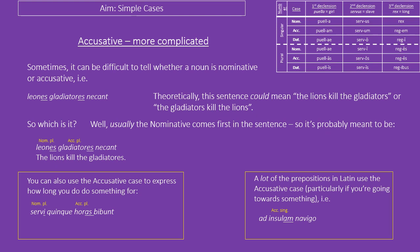There are also a couple of more unusual uses of the accusative. One is expressing time — you can see the sentence where servi are drinking quinque horas: they're not literally drinking 'five hours,' instead it's expressing how long they're doing it for — drinking for five hours. The other major use of the accusative is having a preposition in front of it — something that explains where you're going or where you are. For example: 'I sail towards the island.' You're not doing something to the island, you're just going towards it. If there's a preposition in front of it, always use the preposition to translate — don't worry about it being the object.